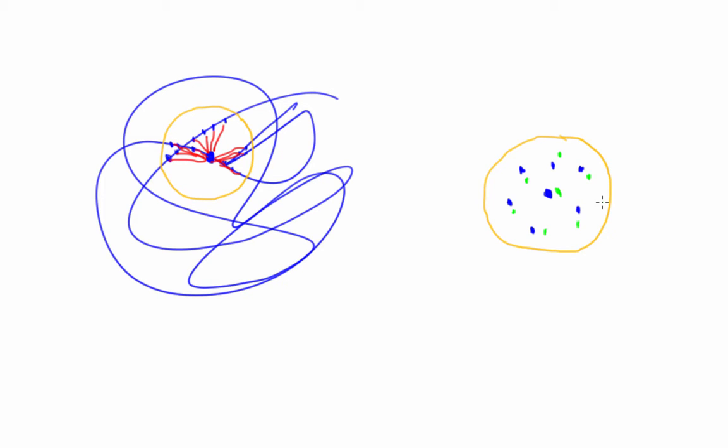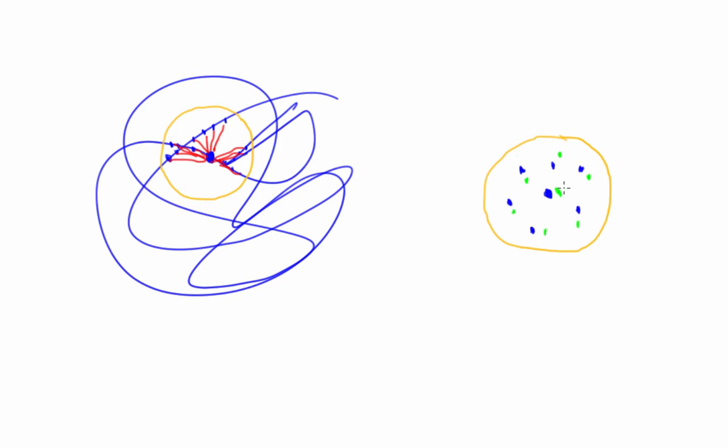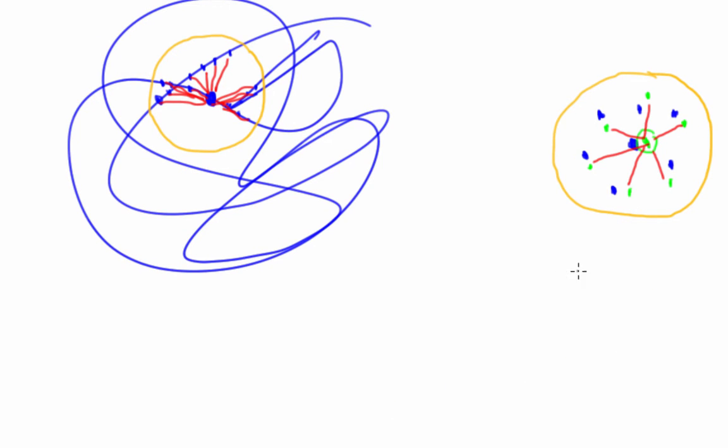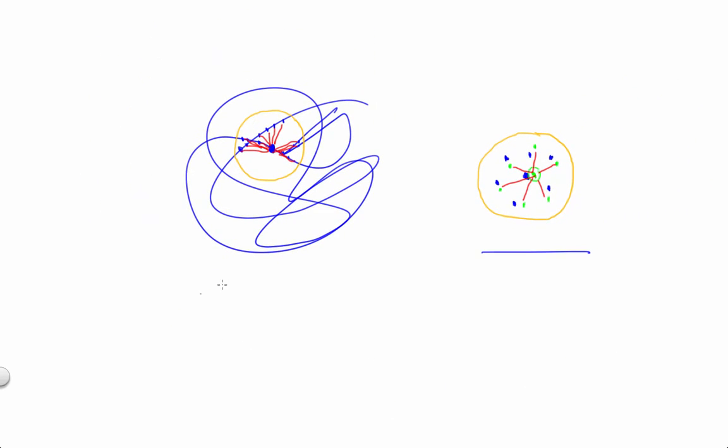Then what I do is I compute the distances between the forward image of that center point, which is where the first one went, and the forward images of all those other points. The ratio of the average of all the red distances in this plot to the average of all the red distances in that plot is a measure of how much the dynamics is stretching out state space around that central point.